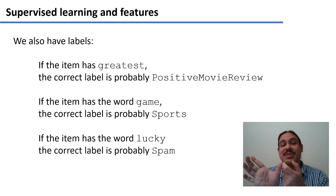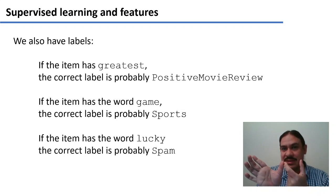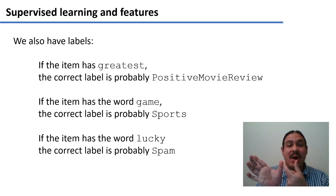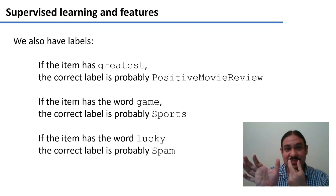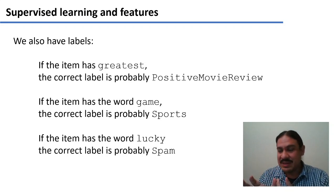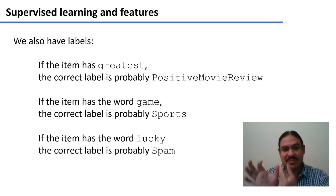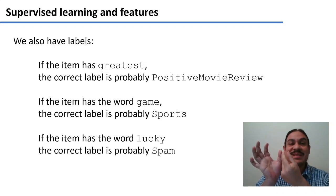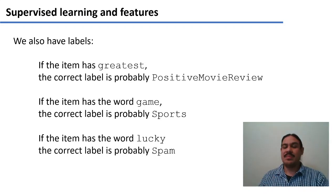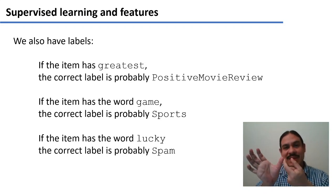In supervised learning, we also have labels appended to each training example. Maybe we have the label that it's a positive movie review, and we try to associate the fact that this document has the word greatest with the label positive movie review. Maybe the item has the word game — so it is a document about sports. Maybe the item has the word lucky — so maybe it's a document that is spam. So we have vectors of features and labels.